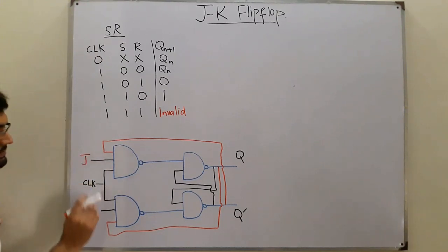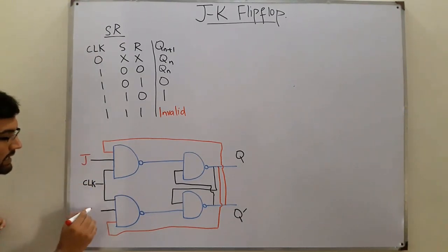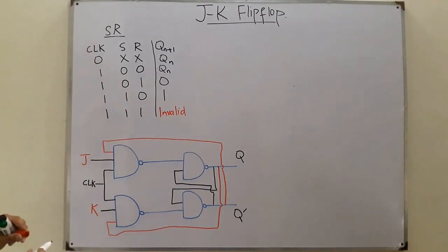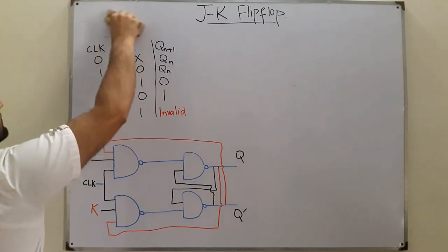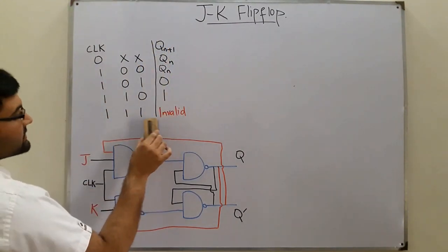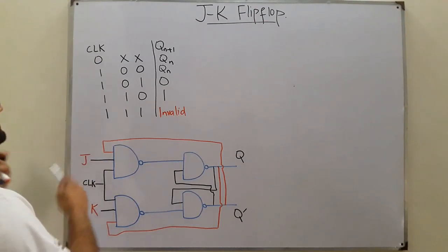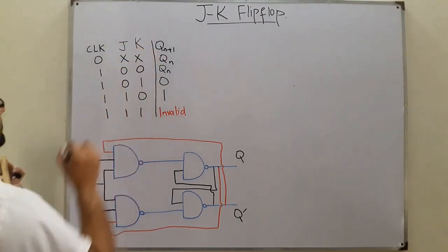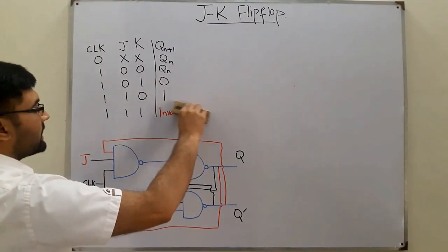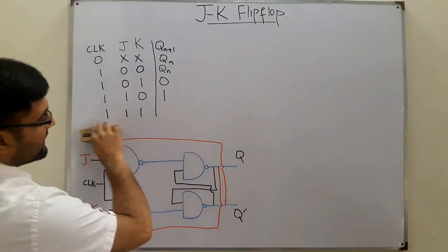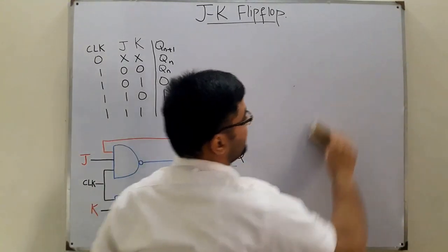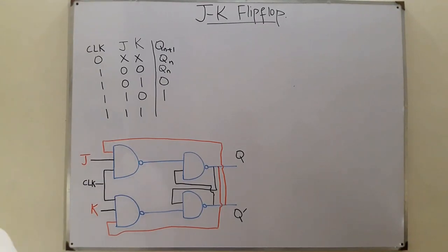Now S and R are replaced by J and K respectively, both in the circuit and in the truth table. For the previously invalid condition, we now need to find out what the output is. The rest of the truth table remains the same as SR, and you can verify it yourself.